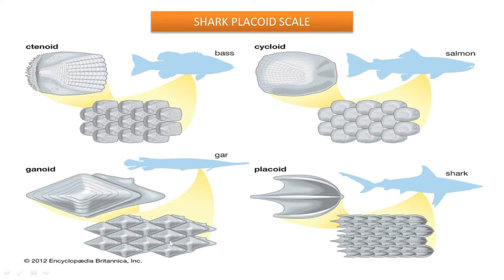A jigsaw puzzle is a familiar activity for kids — some pieces of pictures are provided and the child needs to join them to form a full picture. In the same way, ganoid scales are arranged on the body of the fish.